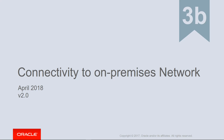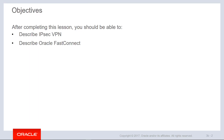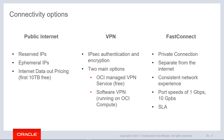Hello, and welcome to this module where we will discuss connectivity to our on-premises networks. The objectives of this module will be to introduce you to the concepts of an IPsec VPN connection, along with Oracle FastConnect. The different connectivity options include public Internet, VPN, and FastConnect.